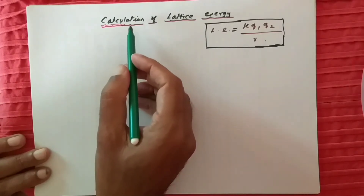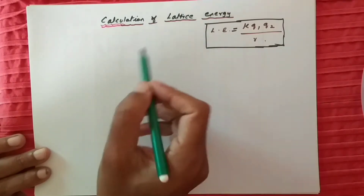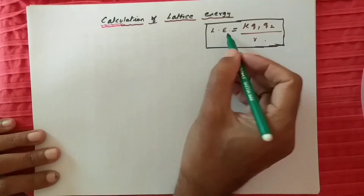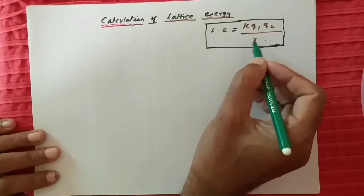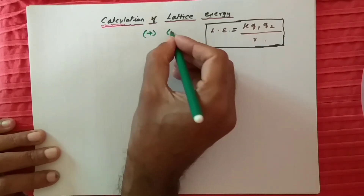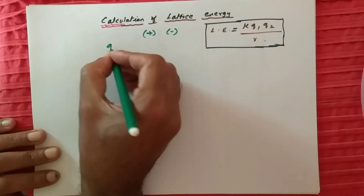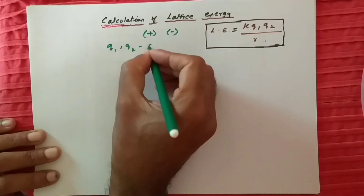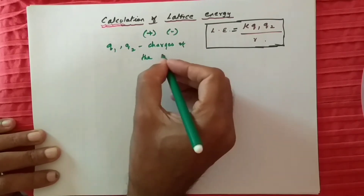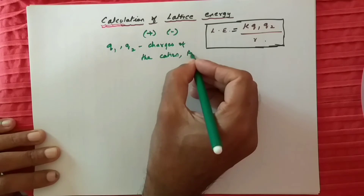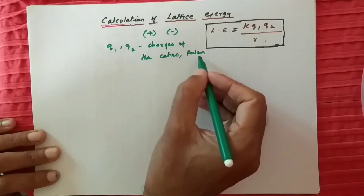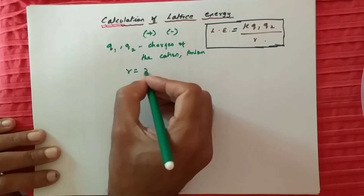Now let us see the calculation of lattice energy. The formula is: lattice energy = k × q1 × q2 / r. This is based on Coulomb's law, because it is a force of attraction between the positive and negative ions. Here q1 and q2 are the charges of the cation and anion respectively, and r is the radius of the ions.